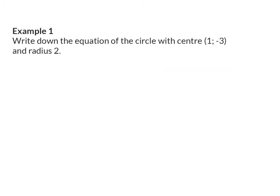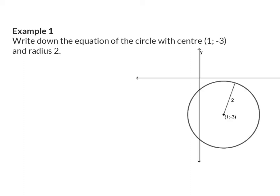Looking at examples, example one asks us to write down the equation of the circle with center at (1, -3) and radius 2. It helps to picture a circle that has moved right and down, with center at (1, -3) and radius 2. We can immediately substitute, since this circle doesn't have its center at the origin. The A and B values are the values of our center coordinates, so we substitute A with 1 and B with minus 3.